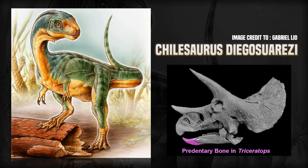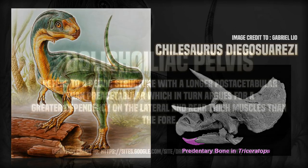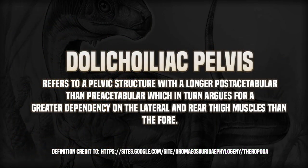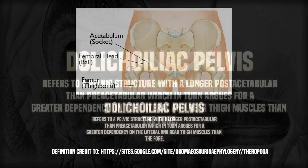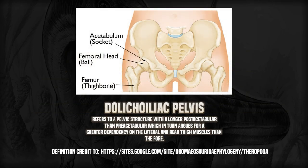But why was it not placed as an Ornithischian? Why did the original paper place it as a Tetanuran? Not only is it lacking key features of other Ornithischians such as the beak, but it contains those typically reserved for theropods — including something called a dolichiliac pelvis. On your pelvis, you have a concave surface called the acetabulum. This is basically the spot where the femur — the thigh bone — connects to your pelvis. If you look at the one on the screen, you can see the concave space where the femur hits and connects — that's what the acetabulum is.